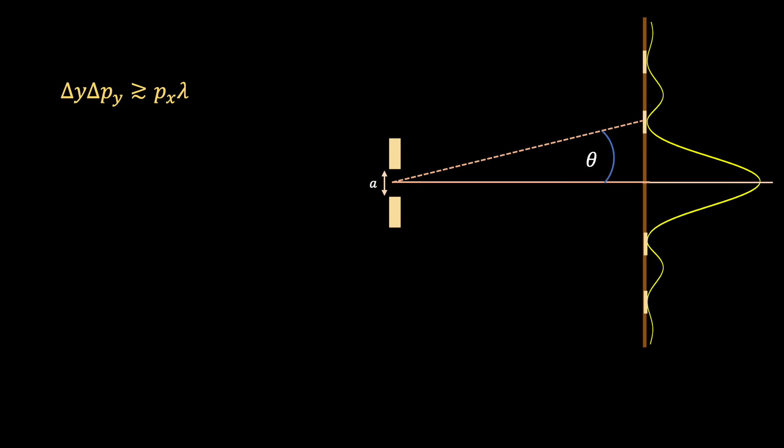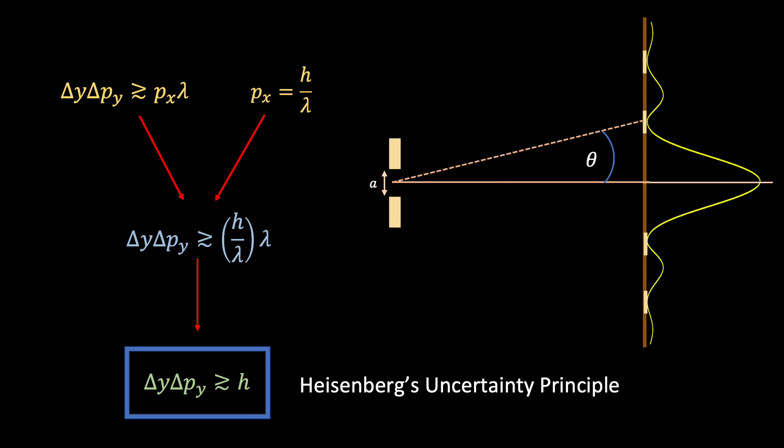And then the final step is to remember that the x component of momentum is simply equal to h over lambda. And so if we sub this into our uncertainty equation, we find the following expression. And then if we cancel out the lambda terms, we finally arrive at the following beautiful expression. Delta y times delta p is greater than or equal to h. And you might recognise this as a statement of Heisenberg's uncertainty principle. This is telling us that there is an inherent limit to how precisely we can simultaneously know our photon's momentum and position.